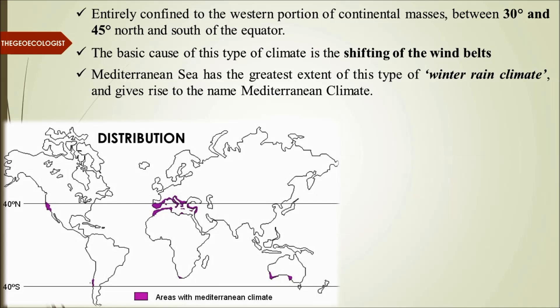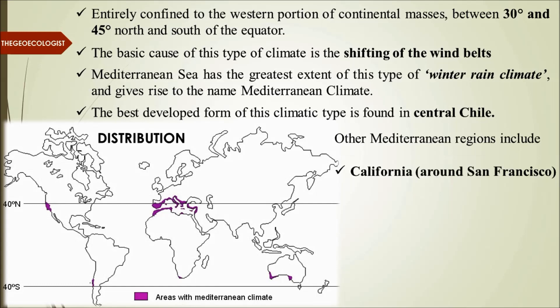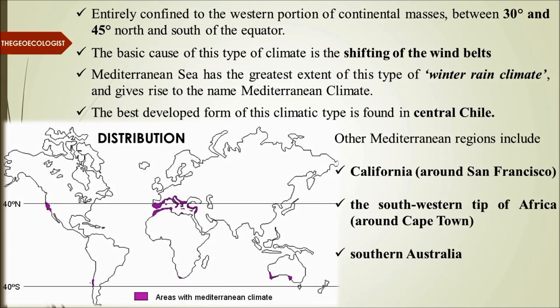This area particularly has rainfall in winters. The best developed form of this climatic type is found in central Chile. Other Mediterranean regions include California around San Francisco, the southwestern tip of Africa around Cape Town, and southern Australia — also sometimes known as Swanland. This is the larger distribution of this biome around the globe.